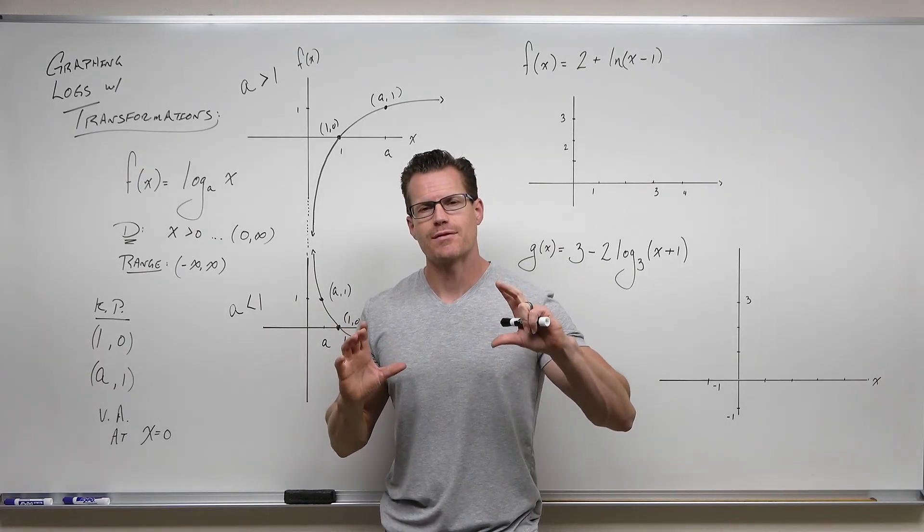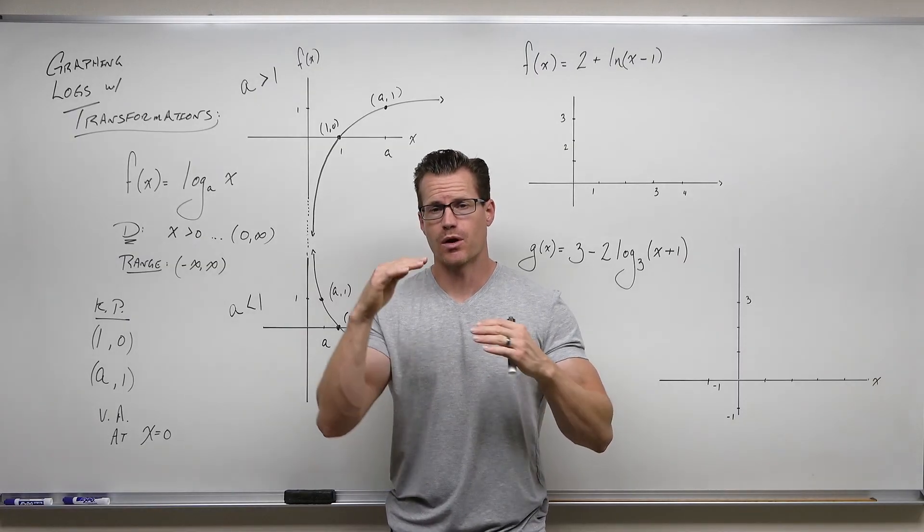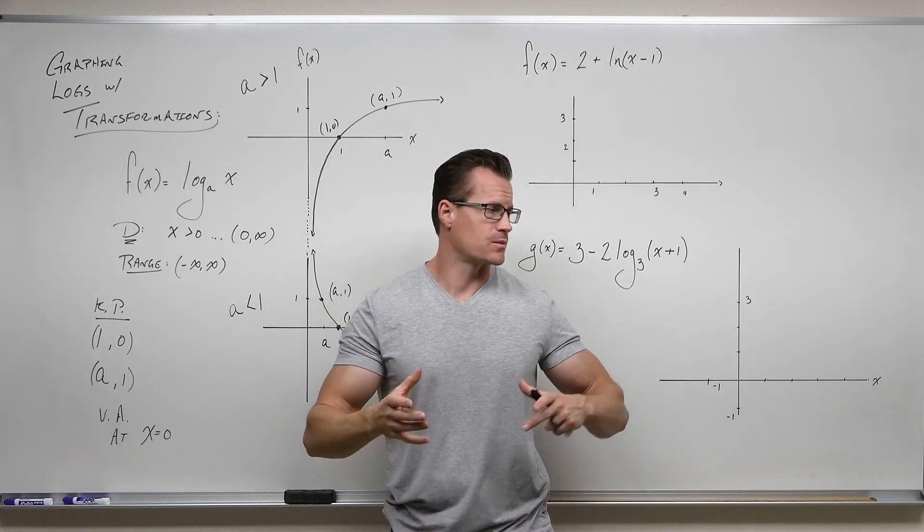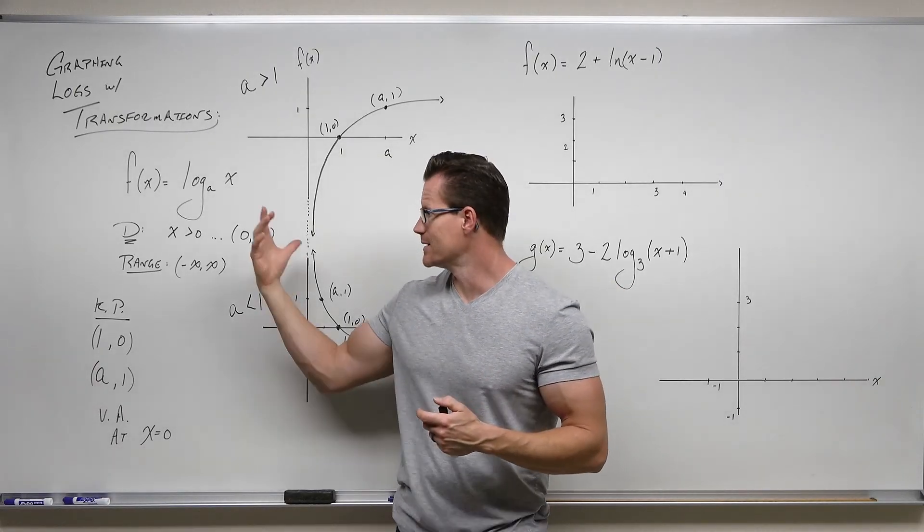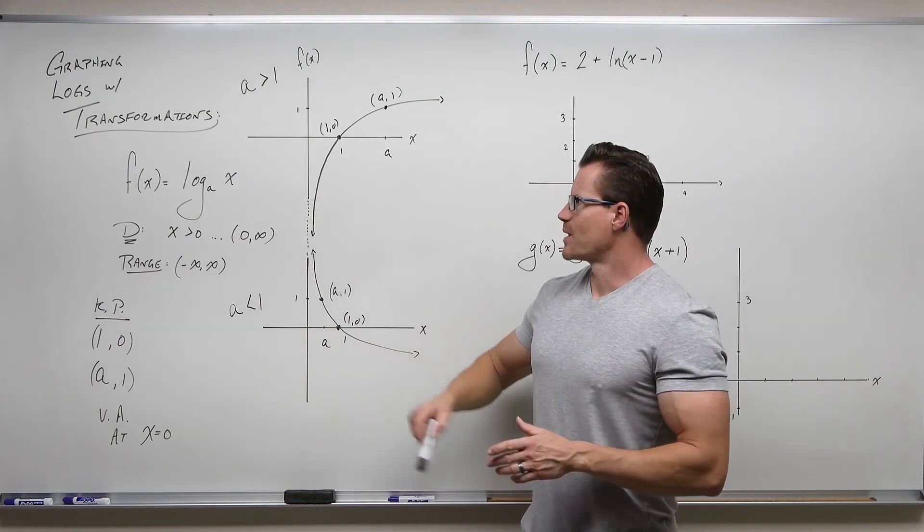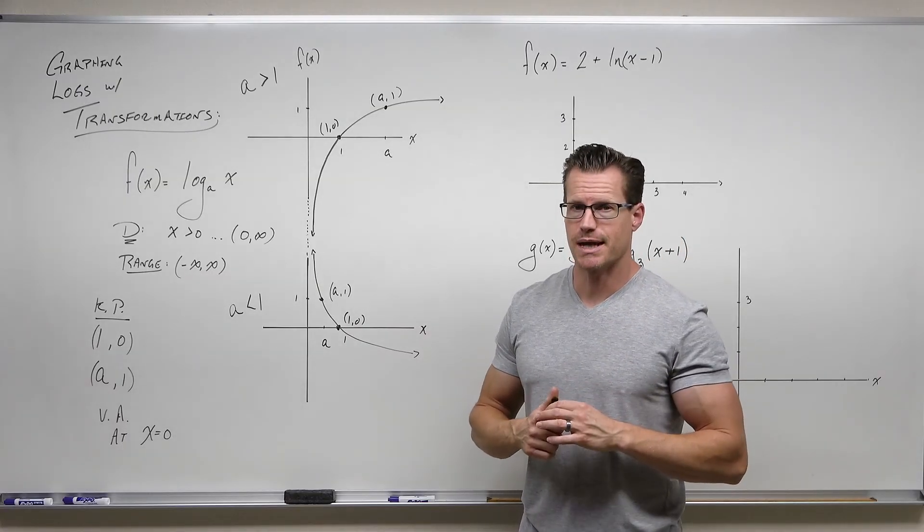Having graphed some exponentials, we should have a pretty good idea about what our key points are, but switched, and what our asymptotes are, but switched. We're applying that logic to some logarithms and just getting these pictures on some new graphs. I'm going to refresh and remember what the graph of a logarithm looks like, what the domain, range, and key points are, then apply that to two examples.